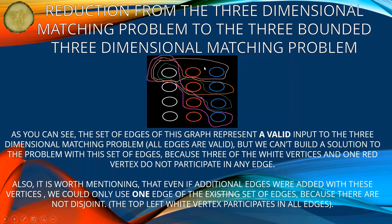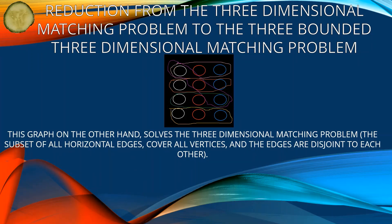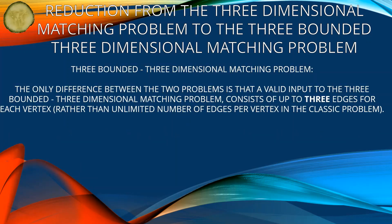As you can see, the set of edges of this graph represents a valid input to the 3-dimensional matching problem. All edges are valid. But we can't build a solution with this set of edges, because 3 of the white vertices and 1 red vertex do not participate in any edge. Also, even if additional edges were added with these vertices participating, we could only use one edge of the existing set of edges because they are not disjoint — the top left white vertex participates in all edges: the green, pink, orange, and purple edge. This other graph, on the other hand, solves the 3-dimensional matching problem. The subset of all horizontal edges covers all vertices, and the edges are disjoint to each other.